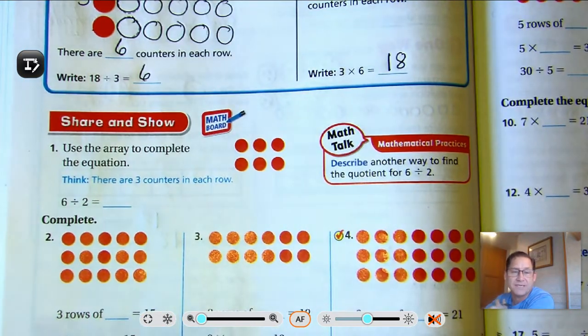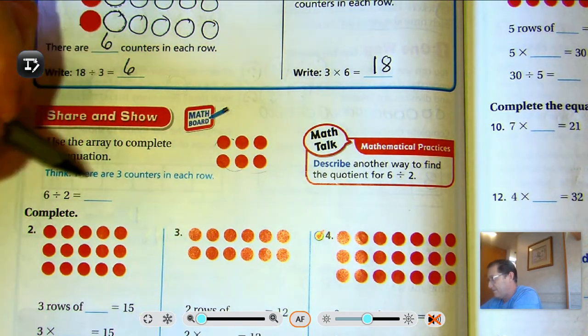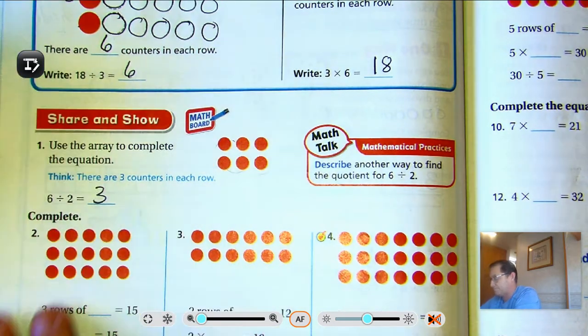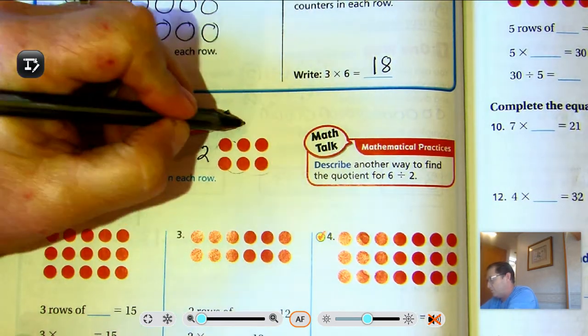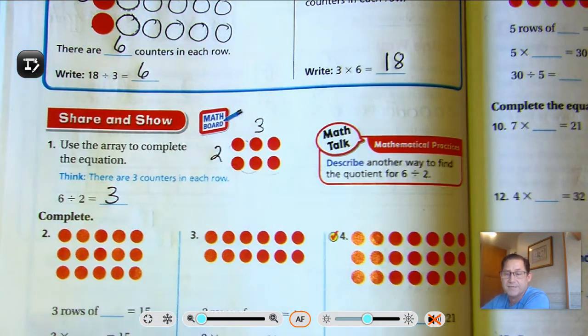Use the array to complete the equation. Six total divided by two. How many do we have in each row? Three. So two by three. Two times three is six.